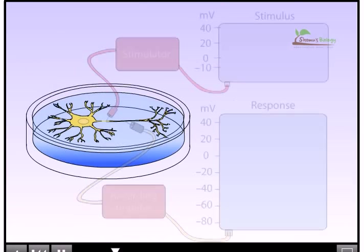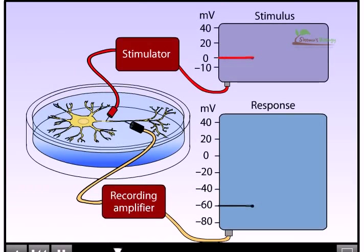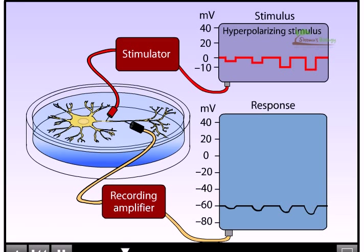In this experiment, the current injected into the cell, the stimulus, is represented in the upper graph and the voltage response below. Notice that a hyperpolarizing current drives the membrane potential in a negative direction, with the voltage response of the cell directly proportional to the magnitude of the injected current.